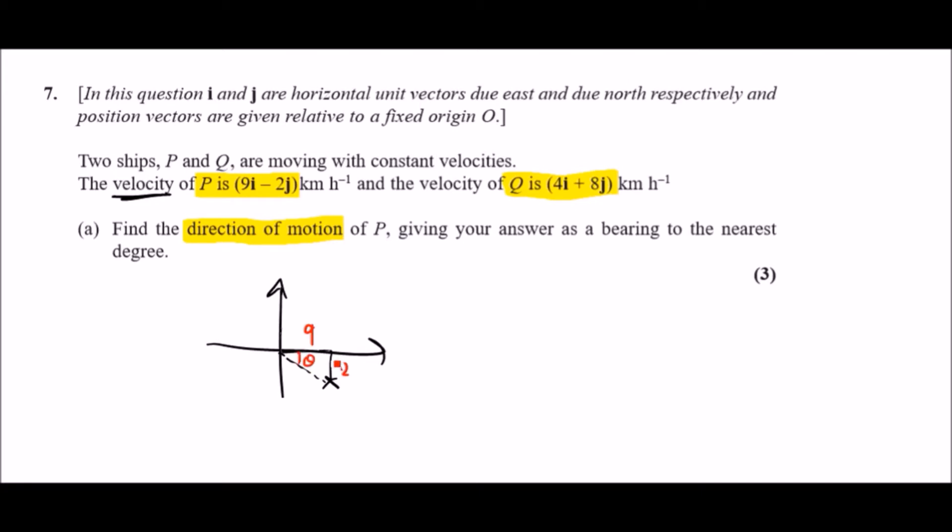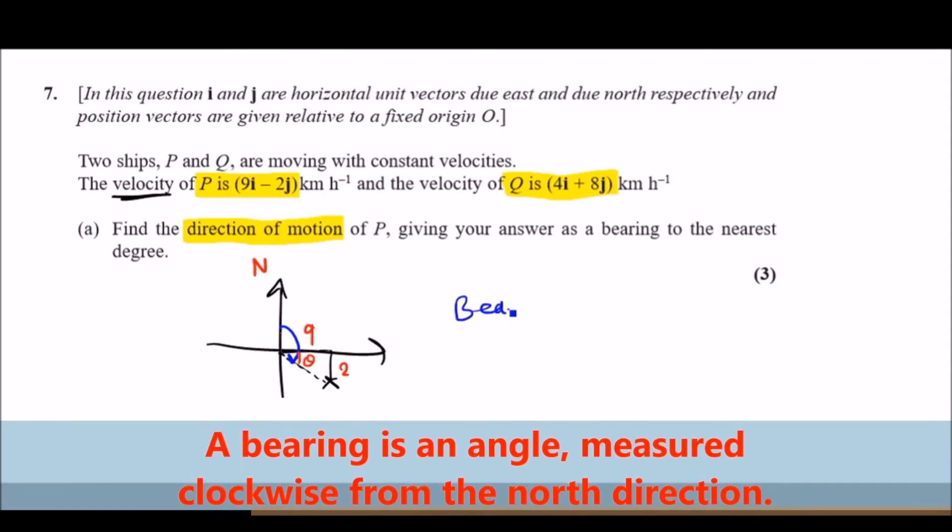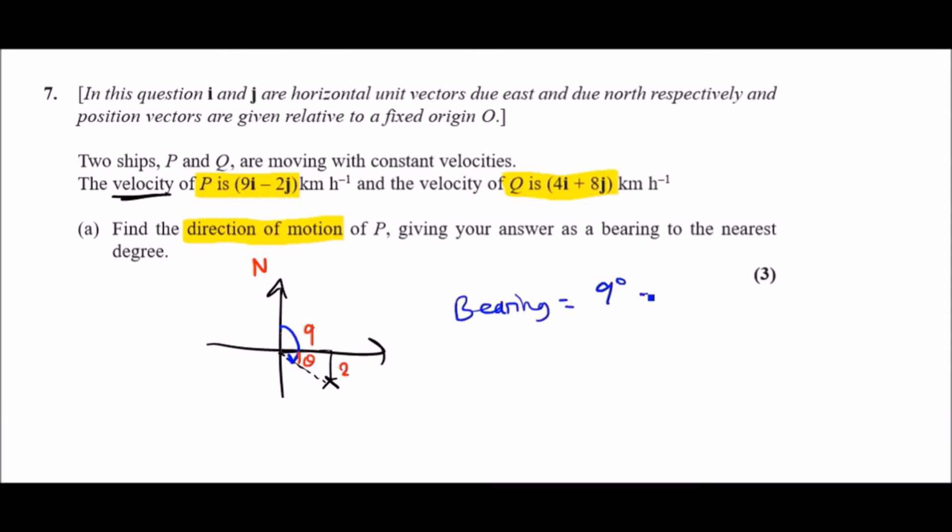Because we're working out the bearing, it's always from the north line. We need to find out the total angle from the north line straight to theta. Basically we're looking at a bearing of 90 degrees because of the right angle, plus the value of theta. This should be the result we're looking for.